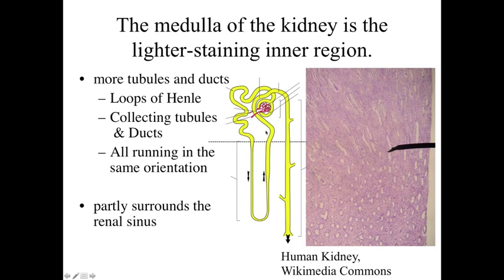With the dashed line showing the cortex as the outer region, the medulla is the inner region. We've got the loops of Henle all running relatively in the same orientation — one going down, the other going anti-parallel back up, essentially running up and down through the medulla. They're running in the same orientation as the collecting tubules and collecting ducts. On the histological image on the right-hand side, we see an even staining appearance — no twisted tubes like in the cortex, no glomeruli, no renal corpuscles. What we see is a longitudinal section of ducts and tubes, some loops of Henle, or cross-sections in an oblique section.